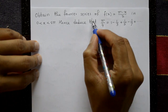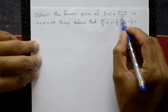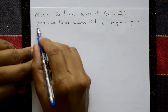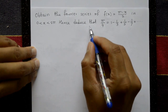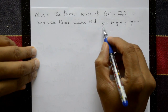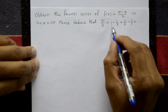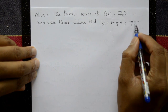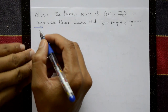Obtain the Fourier series of f(x) = (π - x)/2 in the range 0 < x < 2π. Hence deduce that π/4 = 1 - 1/3 + 1/5 - 1/7 + so on.